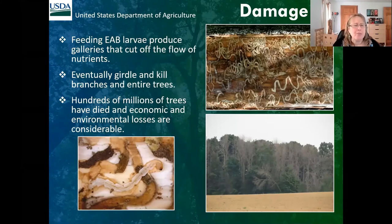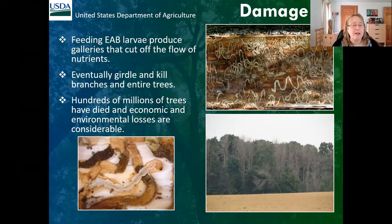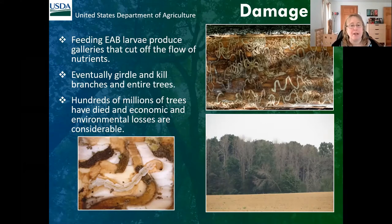Emerald ash borer is incredibly damaging. This is a log where the bark has been peeled off, exposing the galleries of these beetles, and you can see that they just cover the entire surface of the tree. When this happens, the trees are eventually killed — first the tops are girdled and then the entire tree. To date, hundreds of millions of trees have died, and there are huge economic and environmental losses due to this very devastating pest.